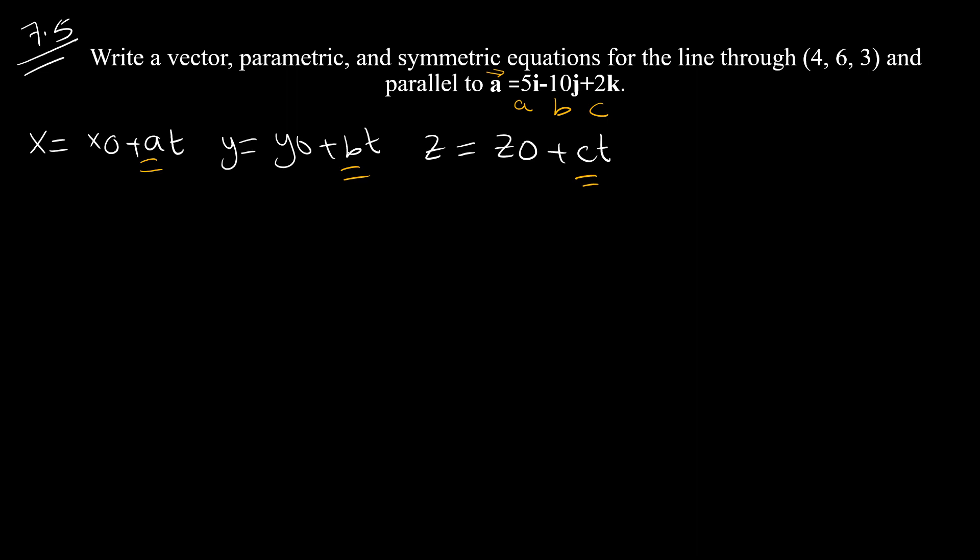This is vector A, so A is 5, B is 10, and C is 2. What about x0, y0, z0? These are the initial point coordinates: 4, 6, and 3. Once we have everything, let's plug into the formula.